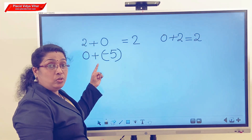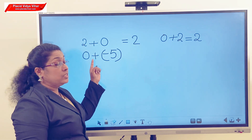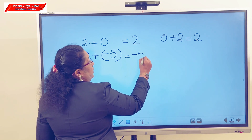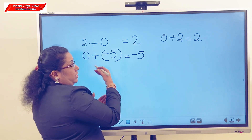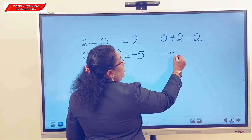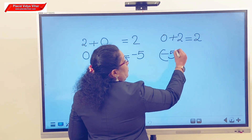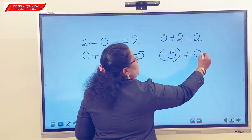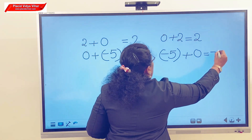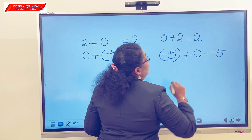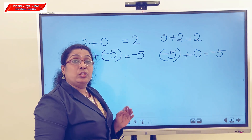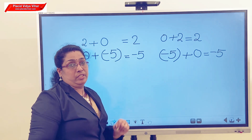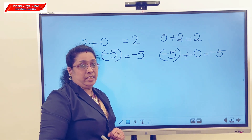Look at this question: 0 plus negative 5, the answer is negative 5. The reverse order: negative 5 plus 0, that is also equal to negative 5. So what can we say? If we add any integer with 0, we get the same integer itself.